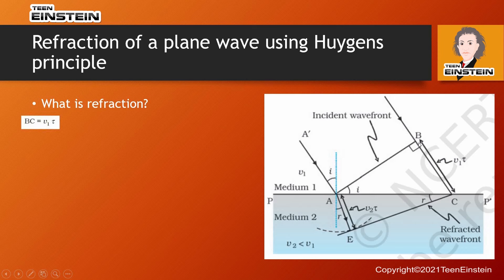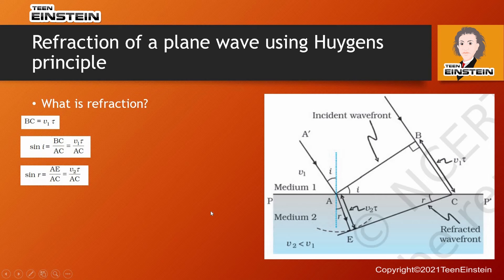The distance BC is the distance traveled by this wave in tau amount of time. Distance is speed × time, so that is V1 × τ. Now, looking at sine I: if this is angle I in this right angle triangle, we can write sine I as BC divided by AC — opposite side over hypotenuse. So sine I = BC / AC.